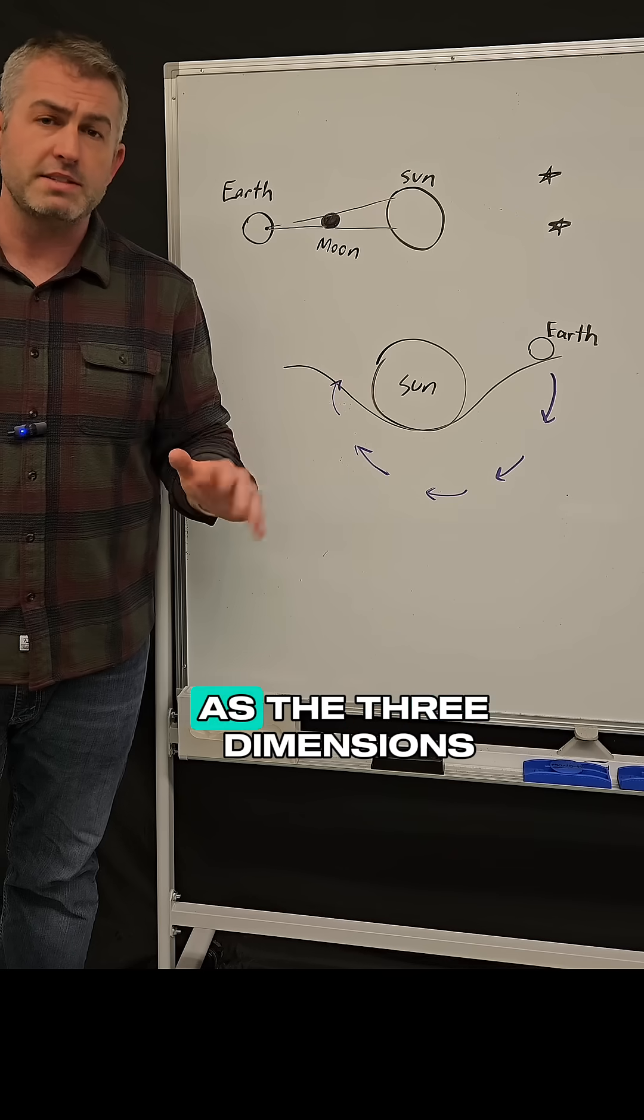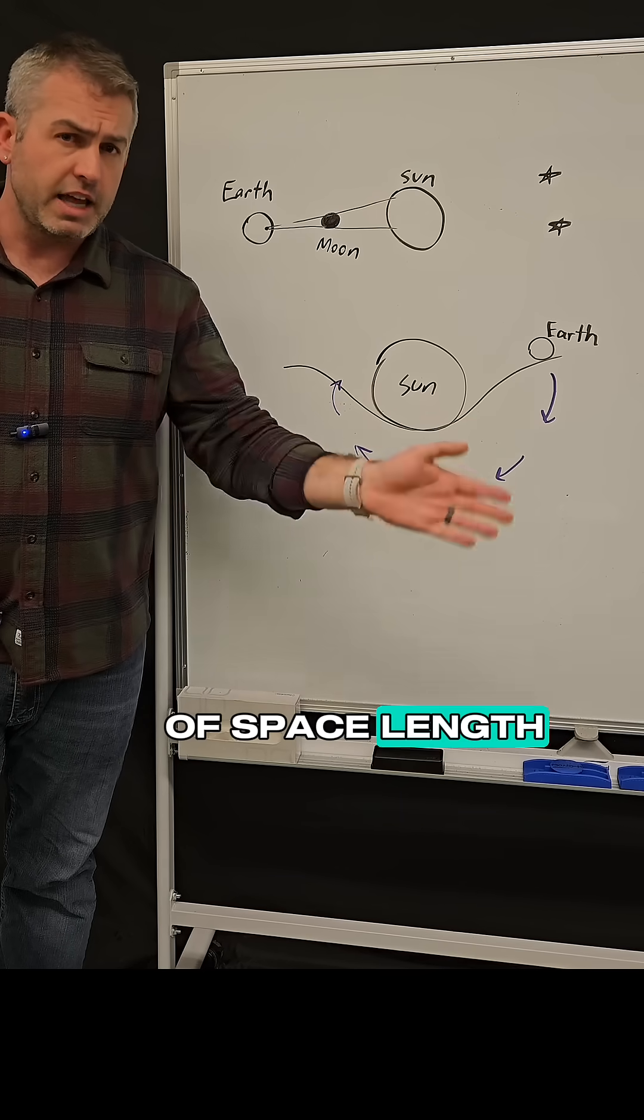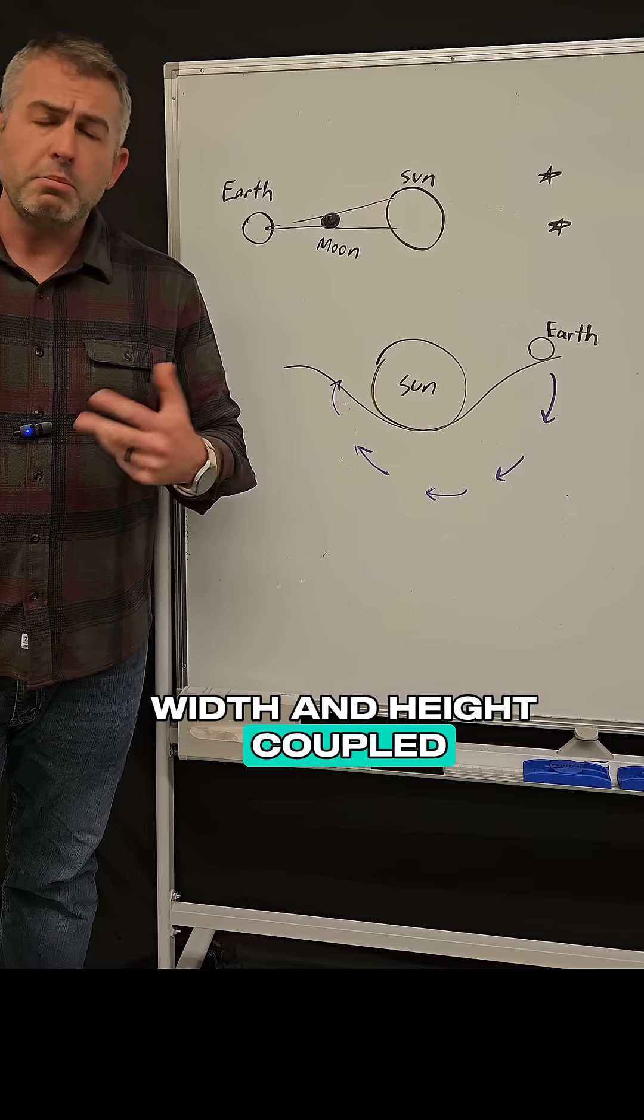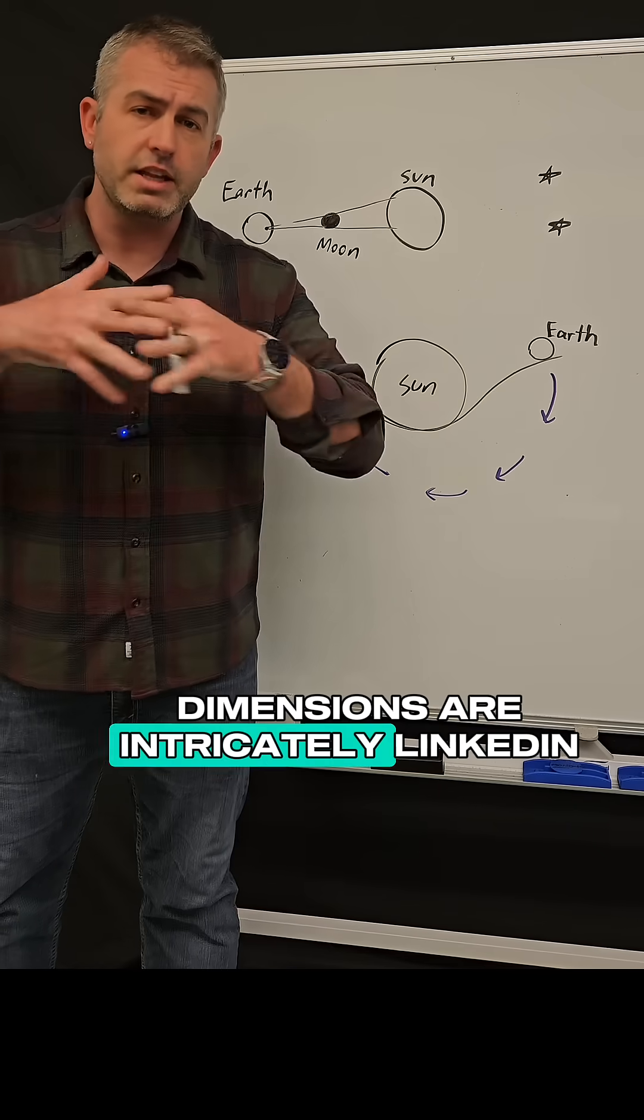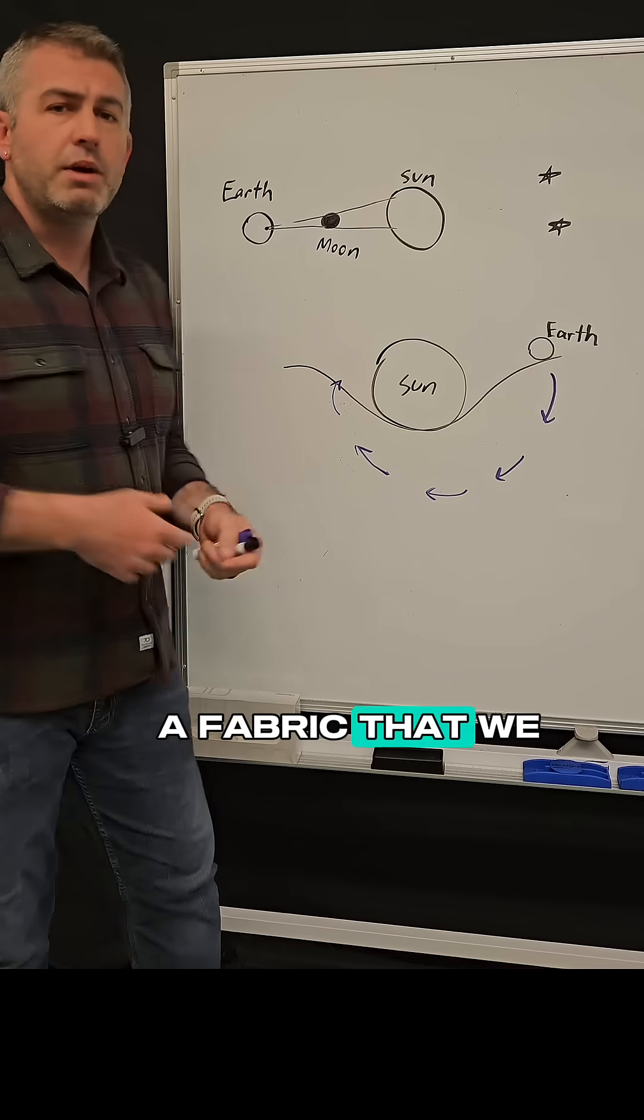So I want you to think of space-time as the three dimensions of space: length, width, and height, coupled with the fourth dimension which is time. And Einstein said all four of those dimensions are intricately linked in a fabric that we call space-time.